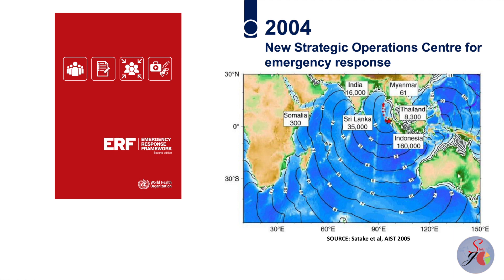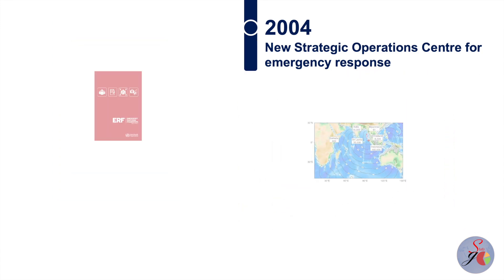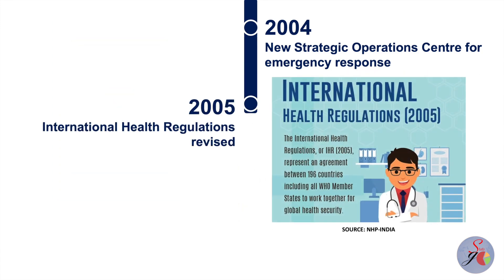This was a significant milestone for the organisation as it showed the importance of having a centralised system to coordinate emergency response efforts. In 2005, the international health regulations were revised, giving countries clear and tested guidelines for reporting disease outbreaks and other public health emergencies to WHO. This triggered response systems to isolate and contain threats promptly.